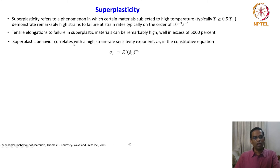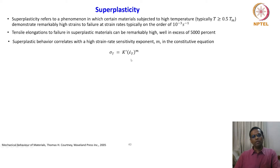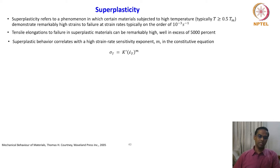Superplastic behaviour correlates with the high strain rate sensitivity exponent m in the constitutive equation. The constitutive equation — which we have already seen in high temperature deformation — is sigma T equals k prime times epsilon dot T to the power m. This is similar to the basic constitutive equation for creep deformation where we related strain rate versus stress and the stress exponent. They are all very closely related.